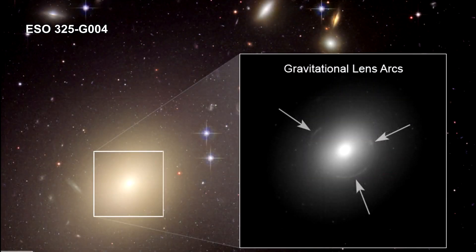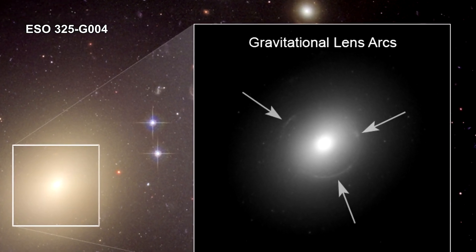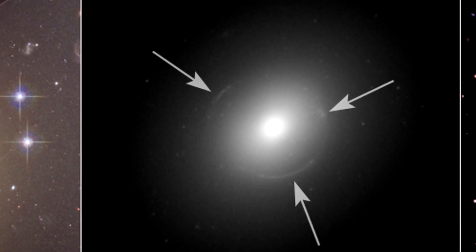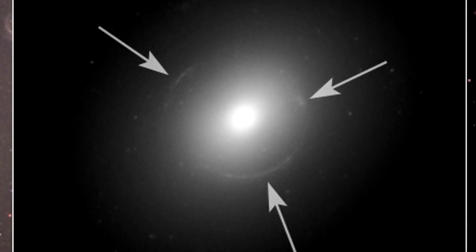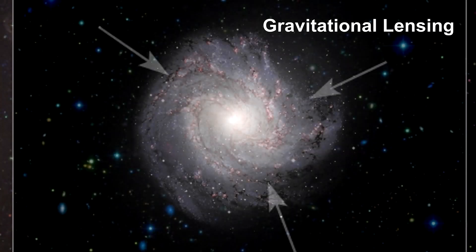You'll remember the Einstein ring we saw around ESO 325-G004 in our segment on local superclusters. The ring was the image of a more distant galaxy. The arc shape was created by the bending of the background galaxy's light by the gravity of the massive foreground galaxy. The process is called gravitational lensing because the mass between us and the background galaxy behaves just like an optical lens.